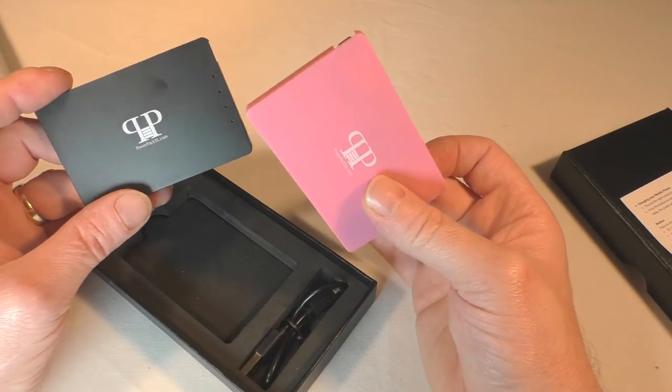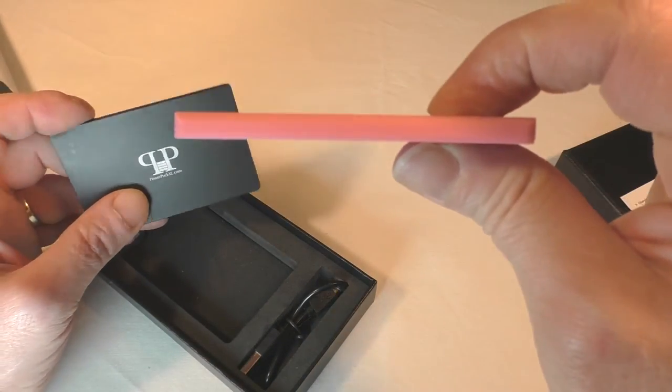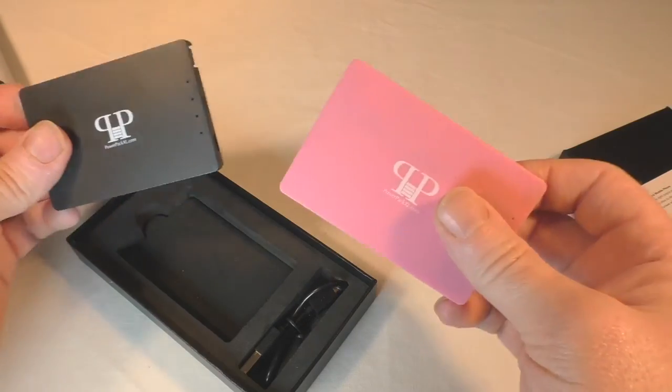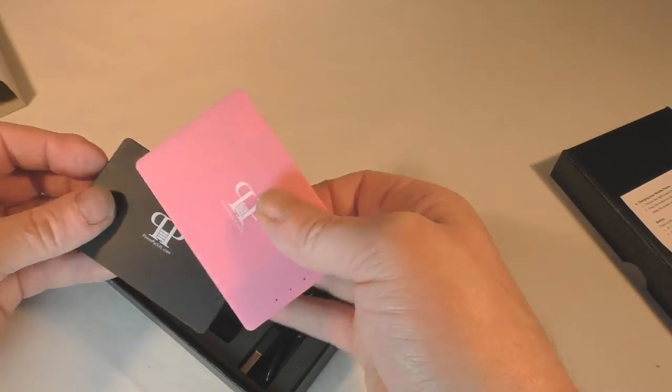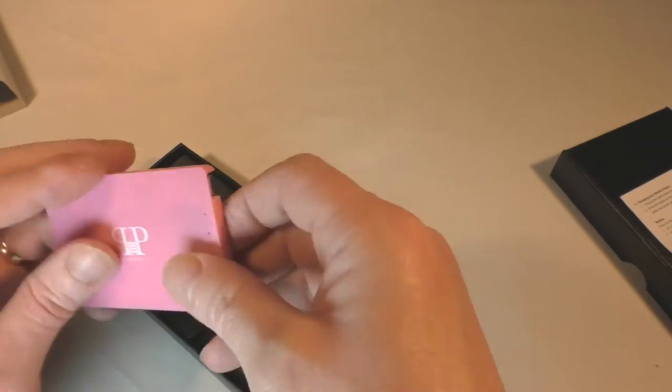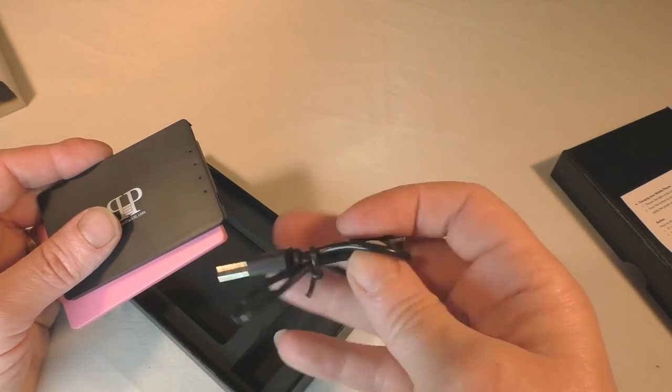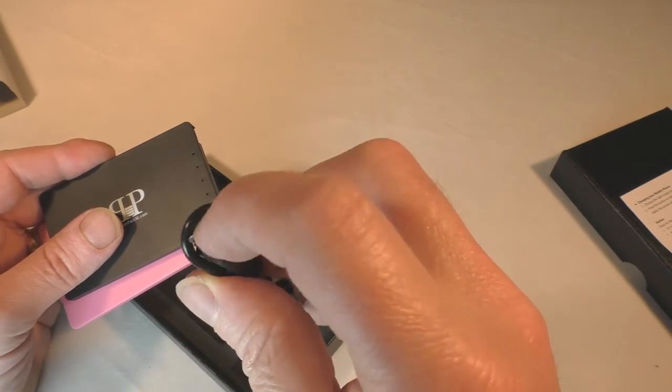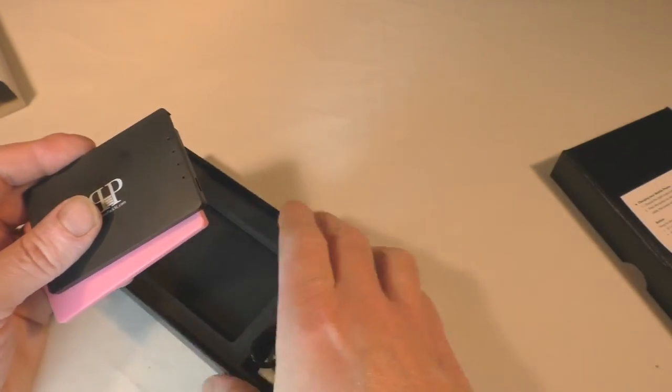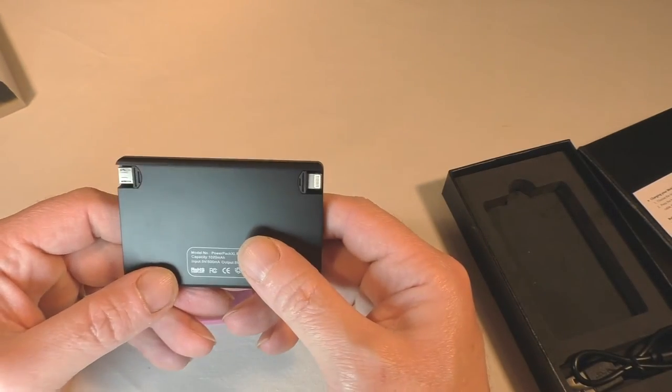Obviously thicker than a credit card, but what's neat is they're all plastic construction and look very nice, very discreet. You can carry them around. You get your charging cable there, micro USB to standard USB, and if you look on the back, this is what makes them pretty neat actually.